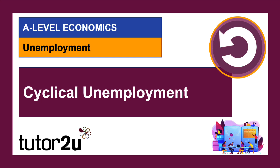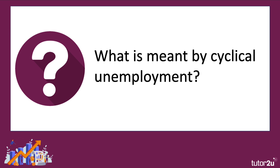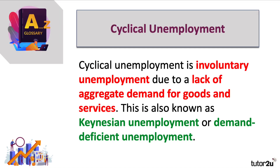Welcome to another video. Let's take a look at a concept I think will be heavily in the news in 2023 and beyond, and that is the idea of cyclical unemployment. Well, it's basically a type of unemployment, a cause of people losing their jobs, which is involuntary. People don't choose for this to happen, but it's linked to a lack of demand for goods and services. It's also known as Keynesian unemployment or demand-deficient unemployment.